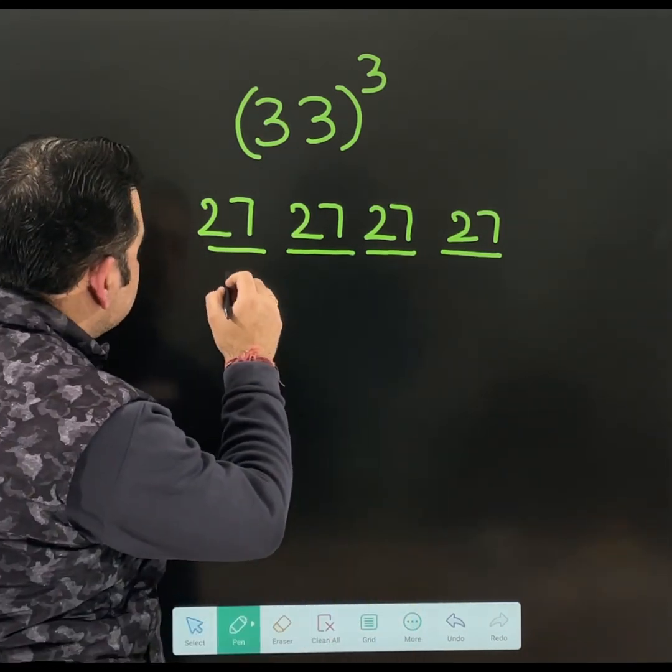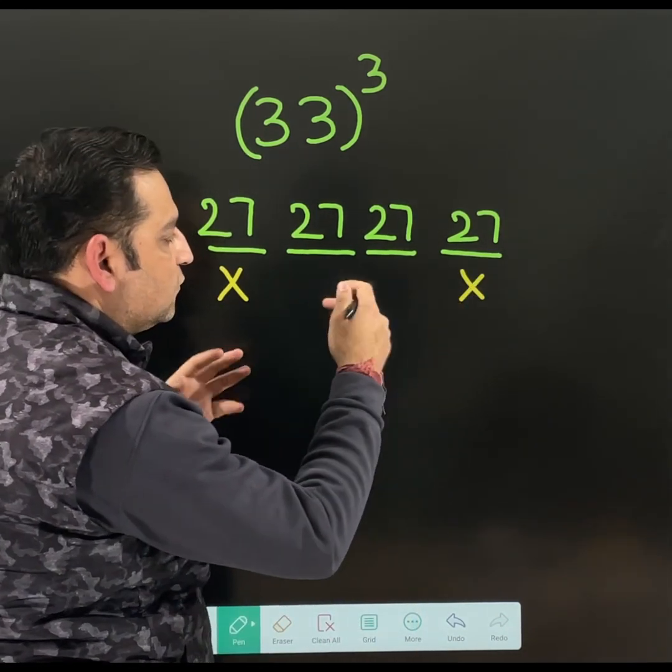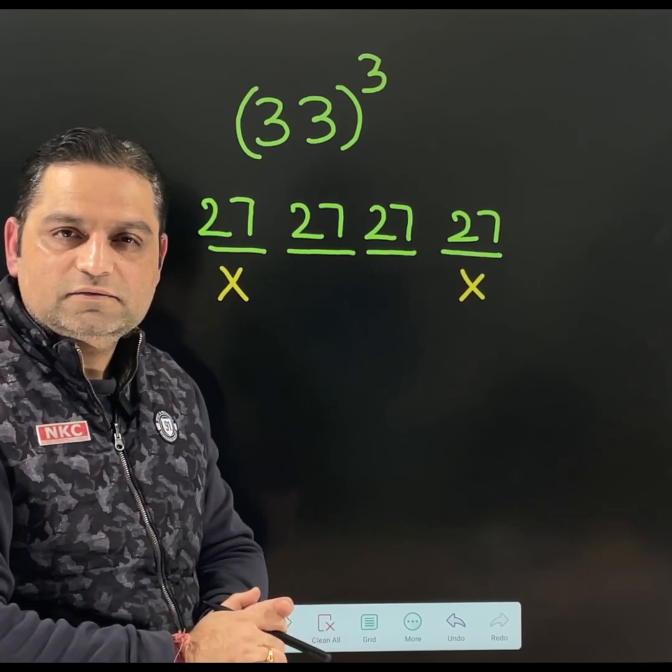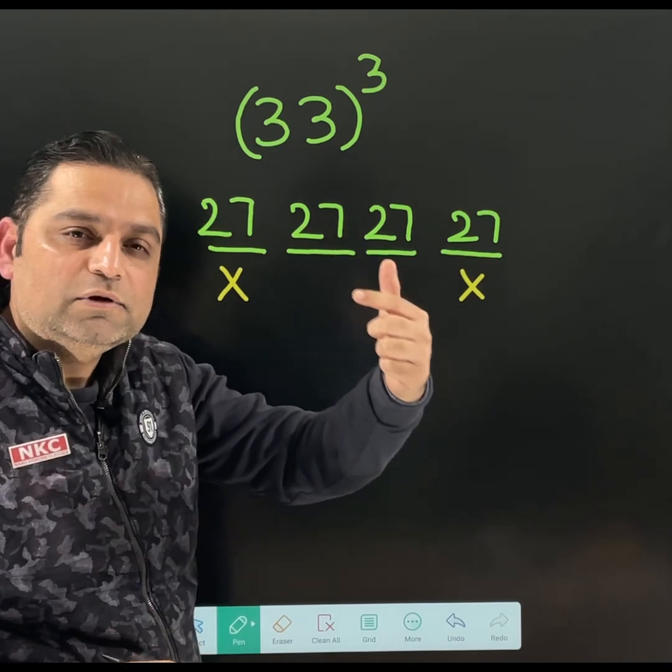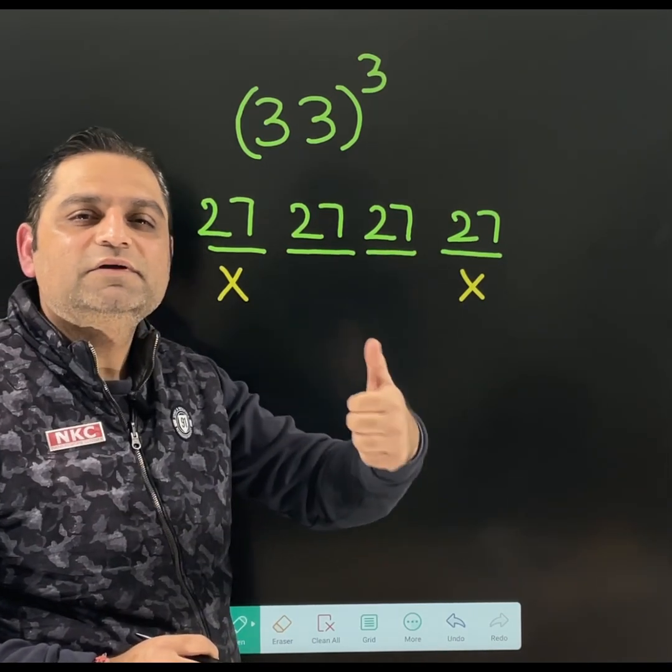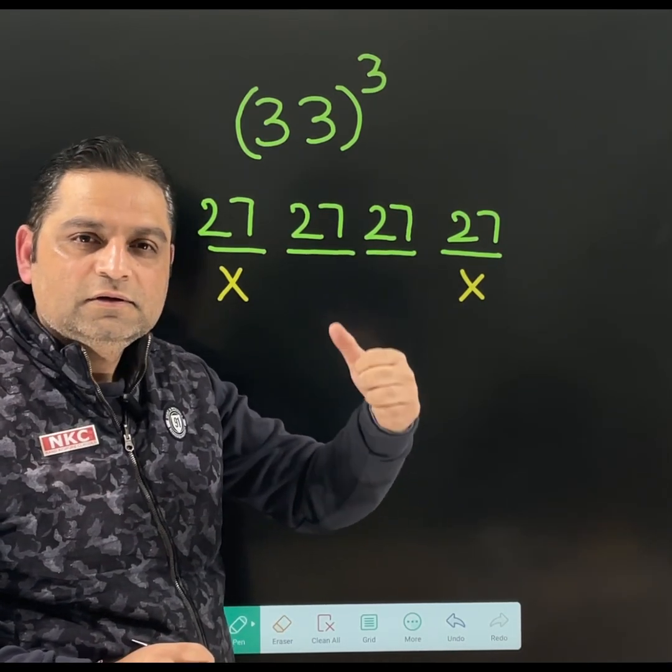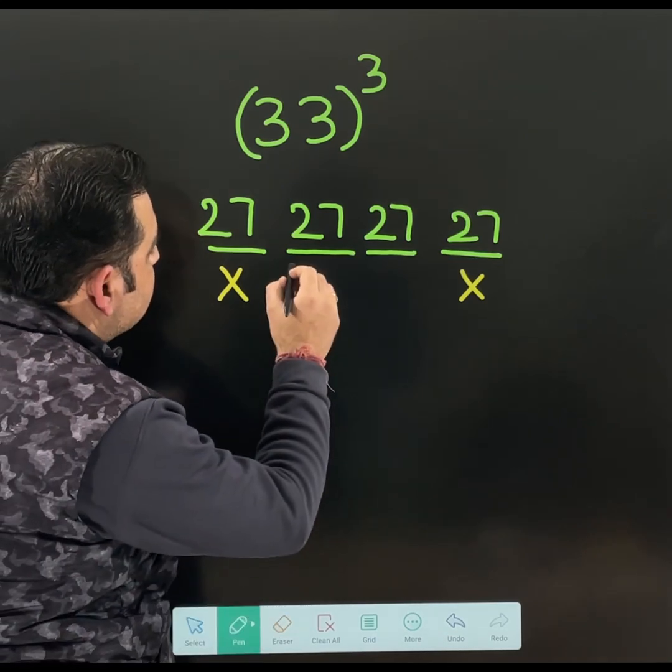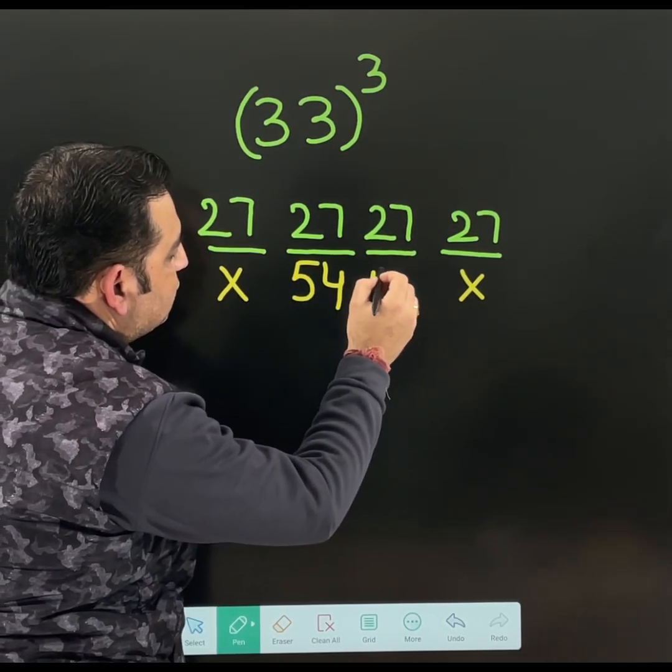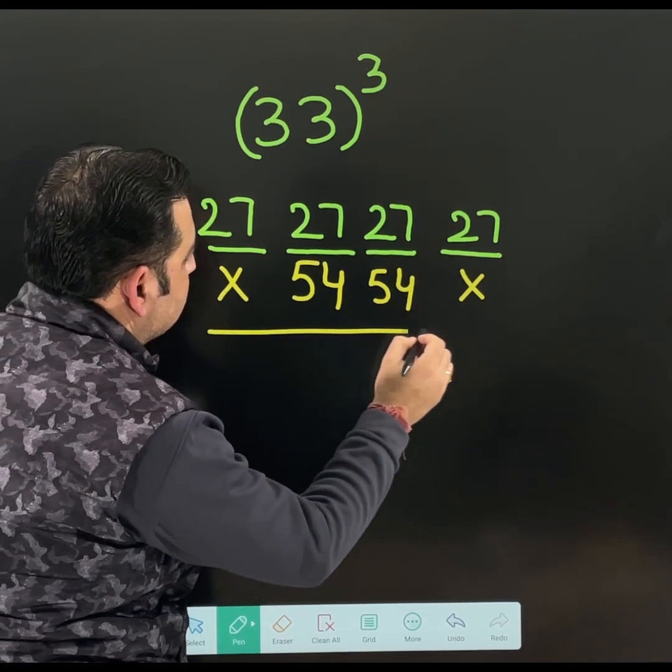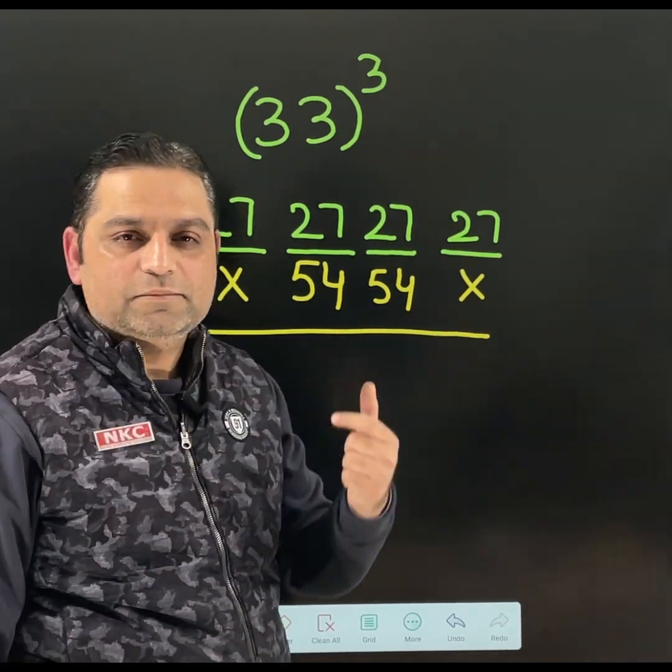Second step was placing cross because I want to leave those spaces blank. And below the middle two values, we were writing double of that. Double means multiplying by 2. So double of 27 is 54. Double of 27 is 54.